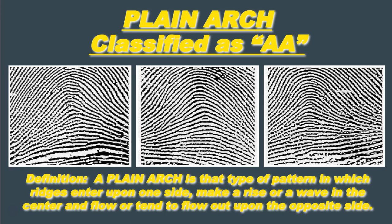When we classify arches, if it's a plain arch, we write the letter A underneath the fingerprint — a capital A if it's the index finger, or a lowercase a for any other finger. In the top right-hand corner, because we don't have a ridge count or a tracing with an arch, if it's a plain arch we put two capital As. If it's a tented arch, we put two capital Ts.